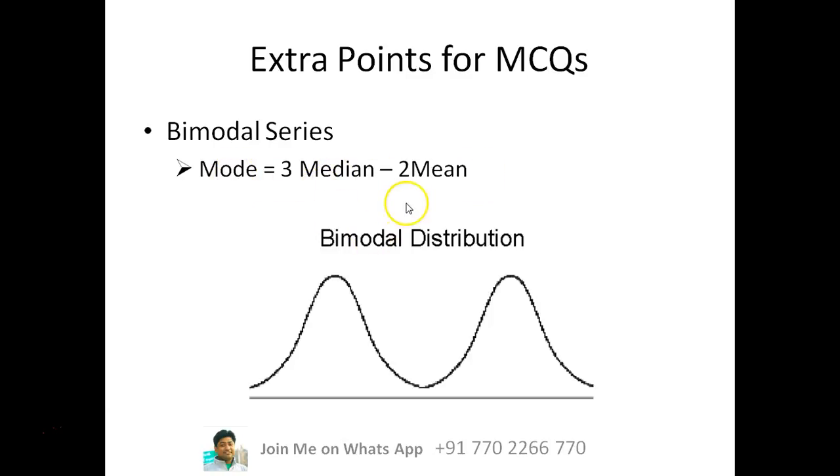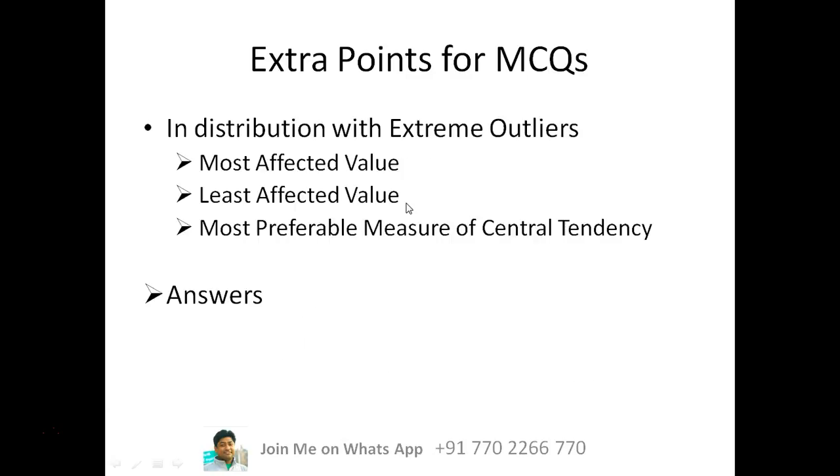Now the next part is, consider a distribution where there are some extreme outliers. Like say there is a set of data where the money with people is 2 rupees, 4 rupees, 5 rupees, 7 rupees, and the last person has 100 rupees. So where the distribution of data, some values are extreme.